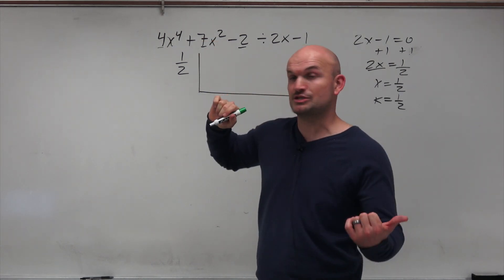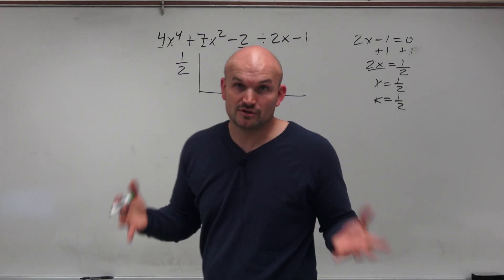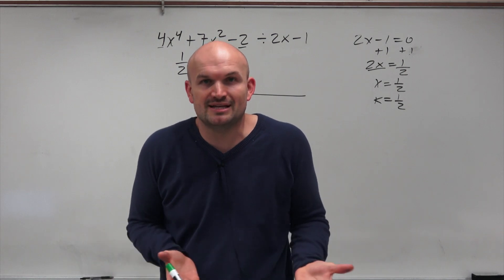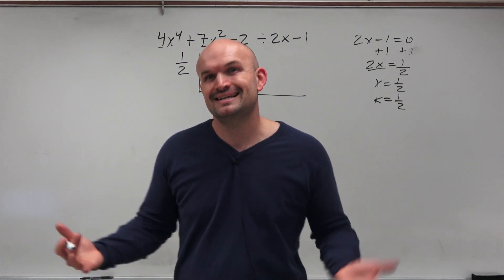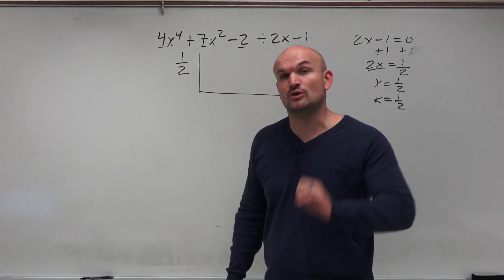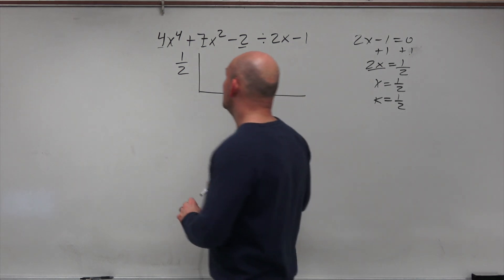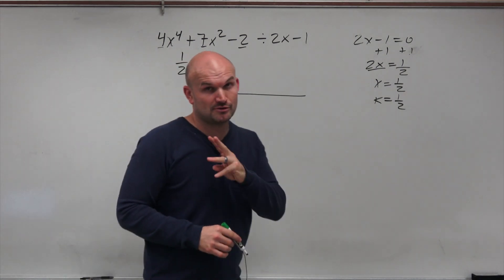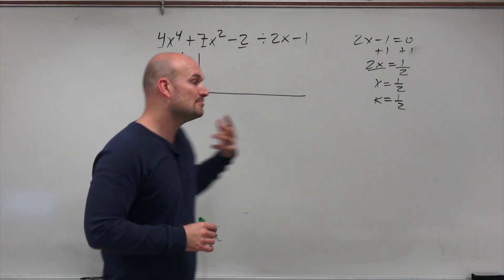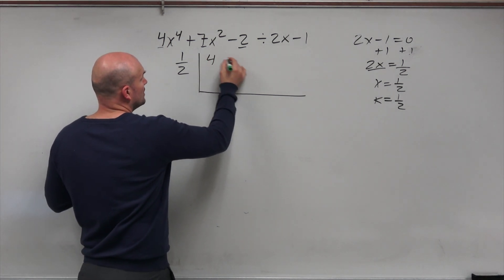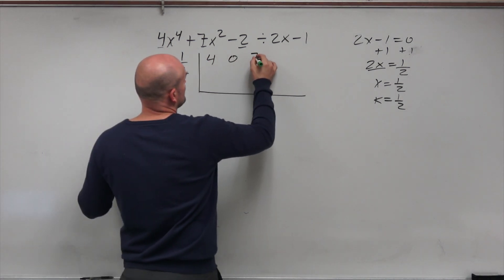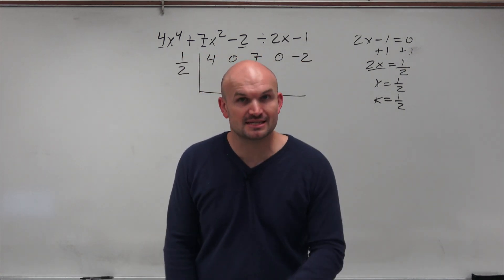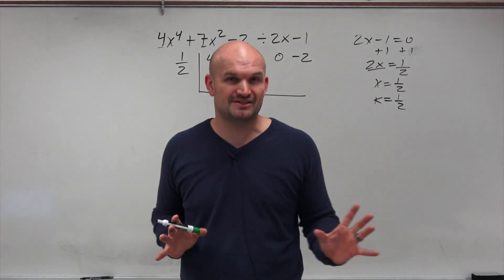If you notice here, I don't have an x cubed, nor do I have an x. But those are still values. Those are still variables in there. They just have a coefficient of 0. And obviously, we don't write them in there, because 0 times x would just be 0. But they still exist. And for synthetic division, we have to make sure we include them. So the second mistake, besides forgetting about your coefficients, would be not including, or your third mistake, would be not including your place values. So here we have is 4, 0, 7, 0, and negative 2. So that basically covers what you need to know as far as the setup for synthetic division.